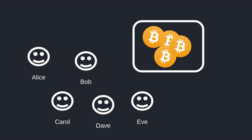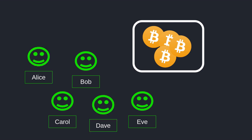If there are five owners, a two out of five multisig wallet will require the approval of at least two owners. Likewise, a three out of five multisig wallet will require the approval of at least three owners. And a five out of five multisig wallet will require the approval of all five owners.